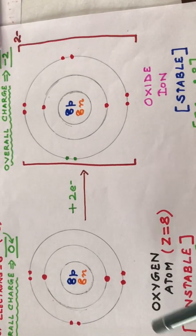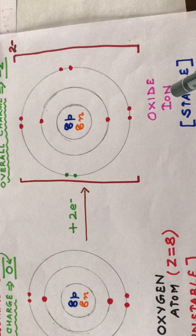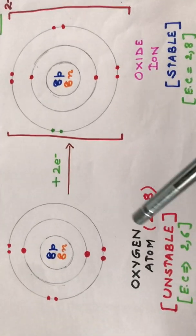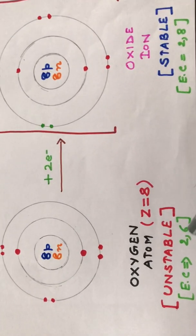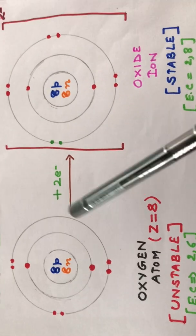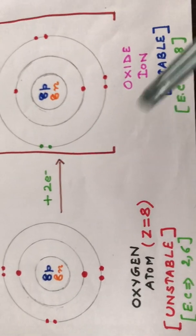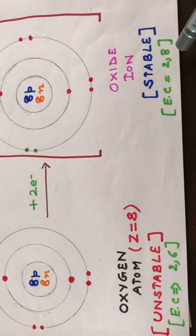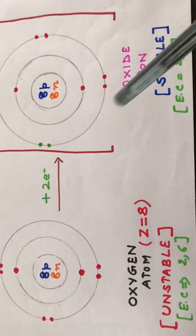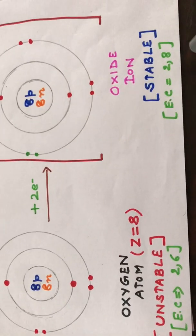The electronic configuration of oxygen atom was 2,6 because it had eight electrons. Since it has gained two more electrons, the total number of electrons has now become ten. Its configuration becomes 2,8, which is a stable electronic configuration.